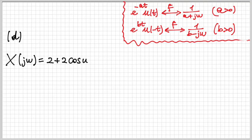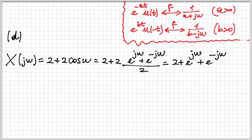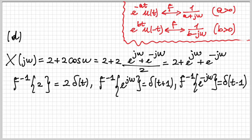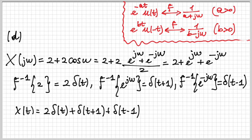The next exercise has X(jω) = 2 + 2cos(ω). Writing the cosine using complex exponentials, the inverse transform of 2 is 2δ(t). Multiplication by e^(jω) in frequency corresponds to a time shift, so the inverse transform of e^(jω) is δ(t+1) and of e^(−jω) is δ(t−1). Summing these, x(t) = 2δ(t) + δ(t+1) + δ(t−1).